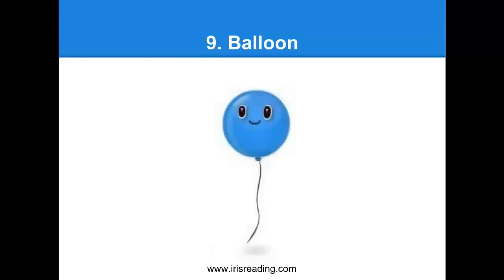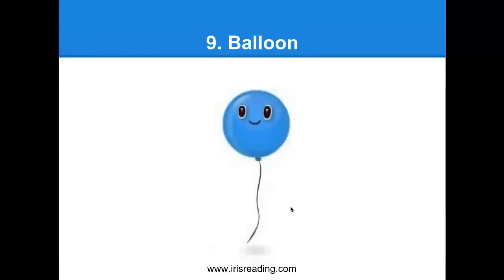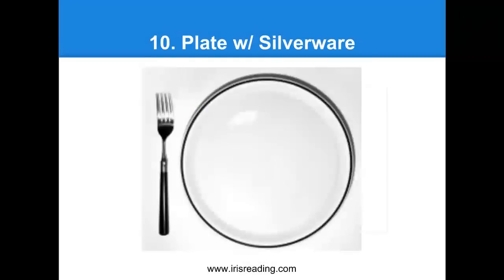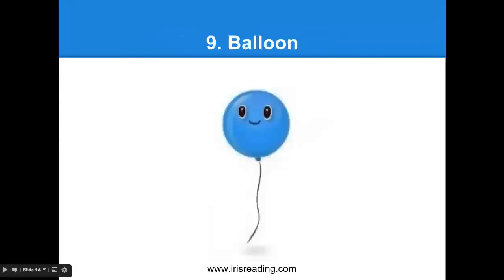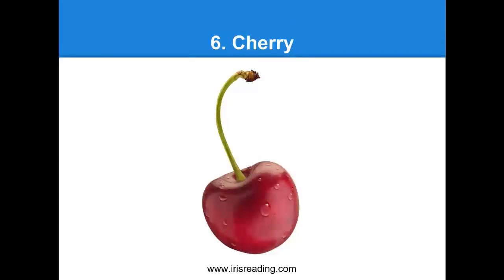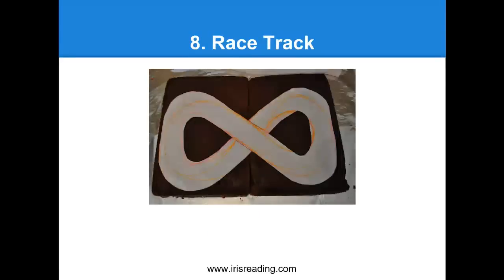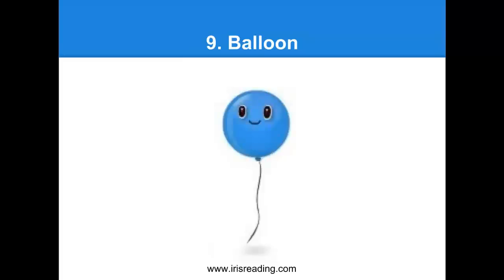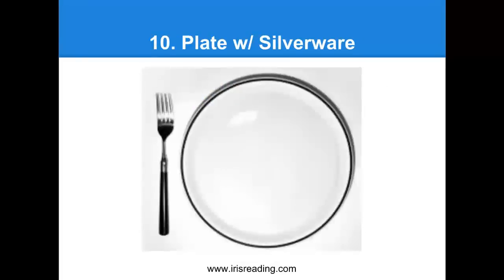Number nine is going to be a balloon. Picture the number nine — the circular part at the top, then the line going down — that's going to be like a balloon. Number ten is going to be simply a plate and silverware. The one is our fork or knife, the zero is our plate, and that makes up ten. Let's review: six is a cherry, seven is lightning, eight is a racetrack, nine is a balloon, and ten is a plate and silverware.